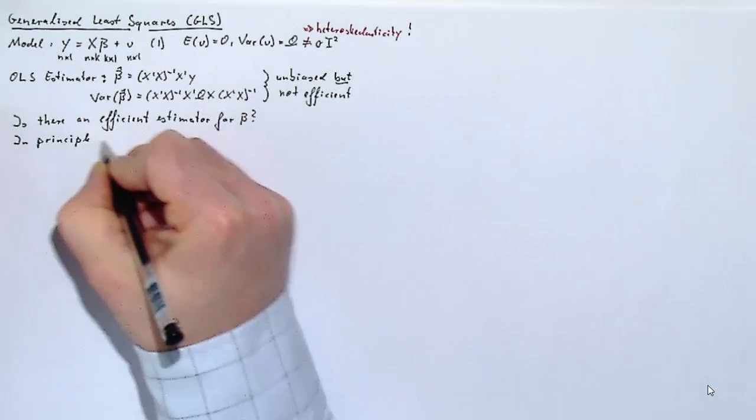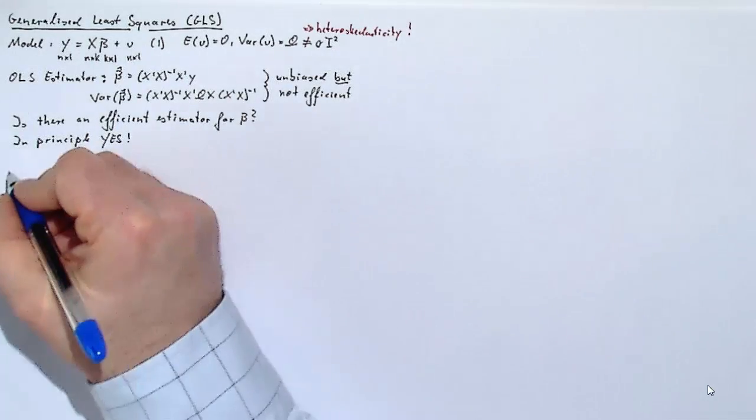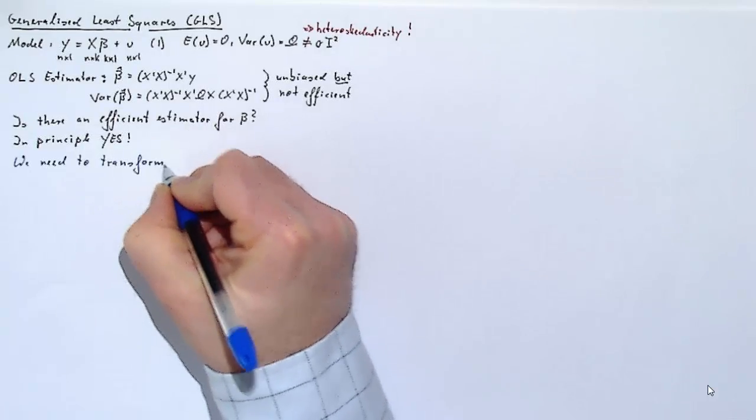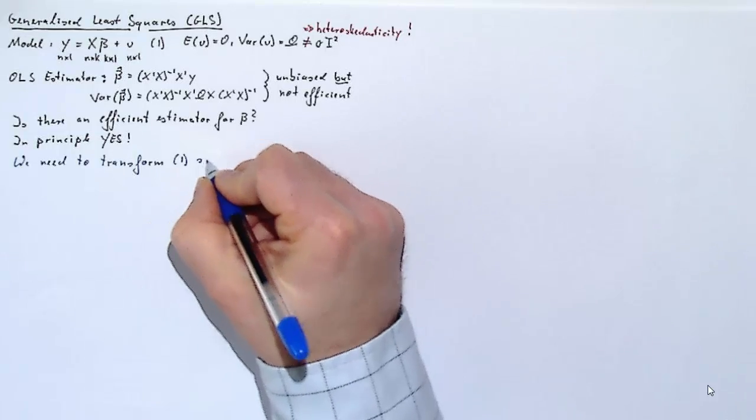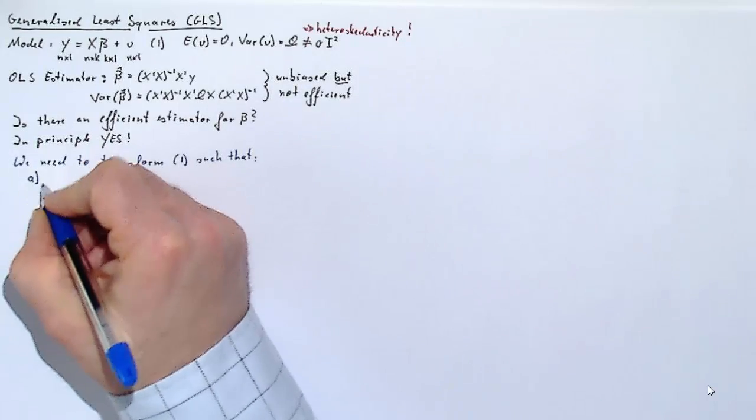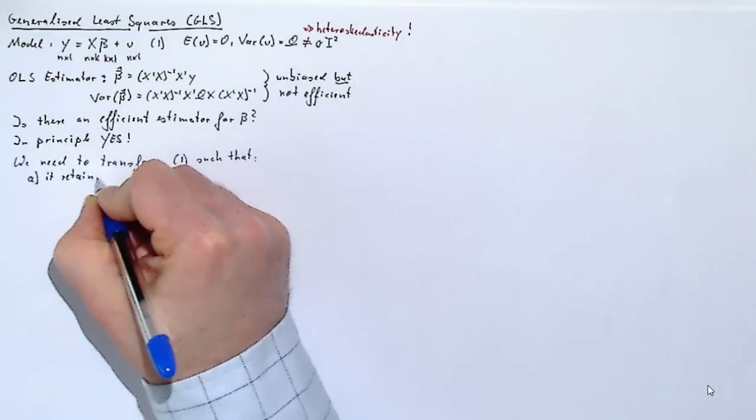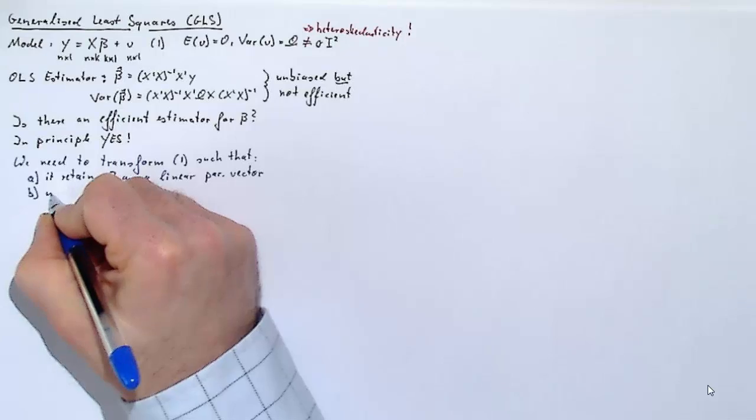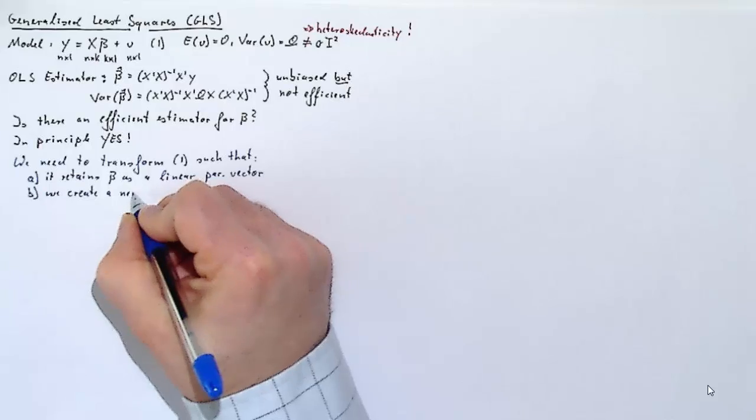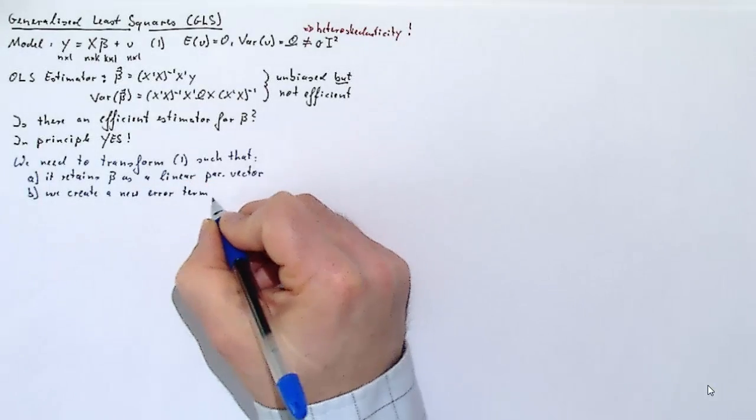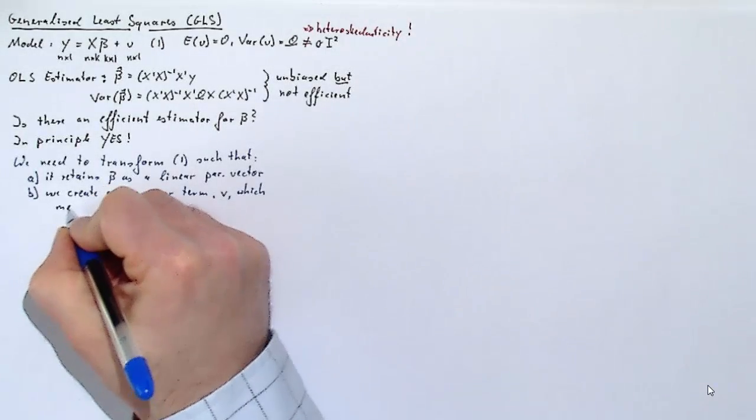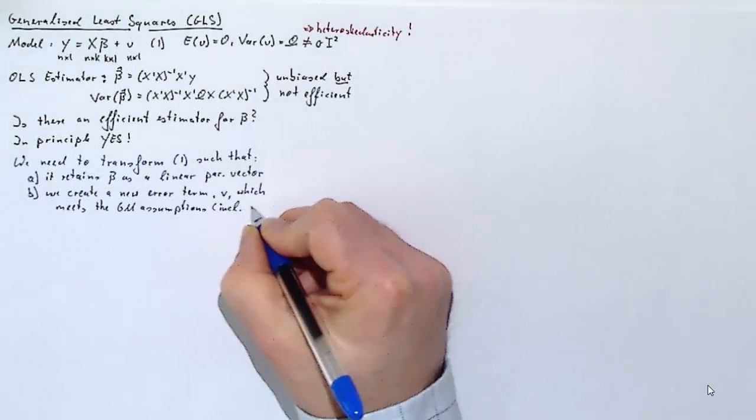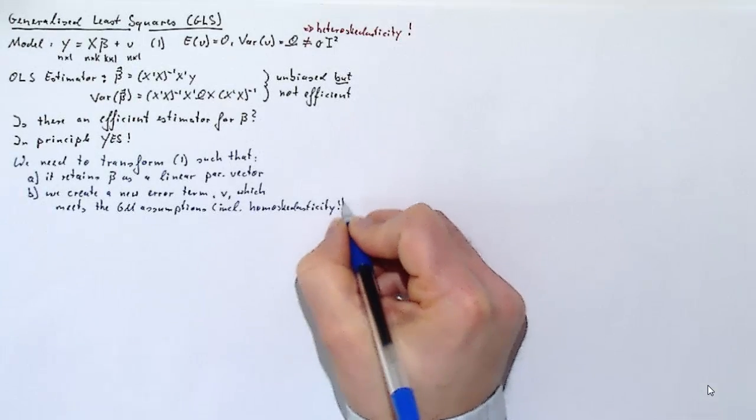The question we are dealing with here now is the question of whether there is an efficient estimator for beta. We know the OLS estimator it is not. In general, the answer is yes, and in fact, an emphatic yes in principle. But let's think of what we need to get there. What we want is some sort of transformed version of model 1, and this transformation has to achieve two things. A, as we still want to estimate beta, it should retain beta as a linear parameter vector, so it shouldn't change anything about beta. And B, it should deliver some sort of new error term for the regression model where the error term actually does meet the Gauss-Markov assumptions. And that, of course, includes the homoscedasticity assumption.